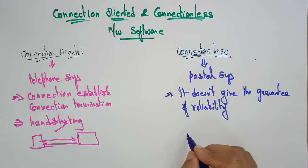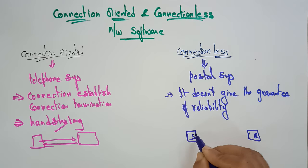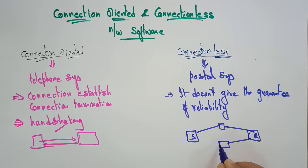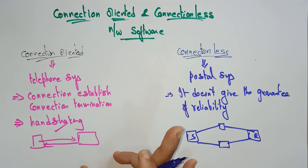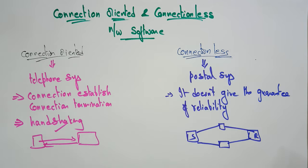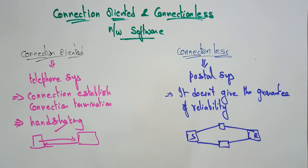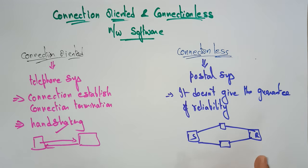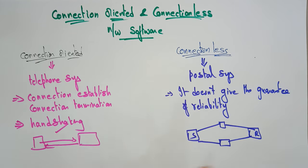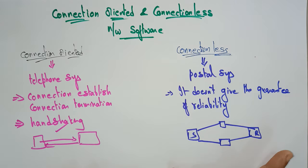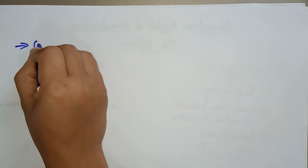In connectionless, the sender can send packets via one route and the receiver may send back via a different route — there is no guarantee of following the same path every time. But in connection-oriented, whatever path is chosen, it follows the same path to reach the destination every time. This is the main difference: connectionless does not include connection establishment, termination, or any guarantee of reliability.